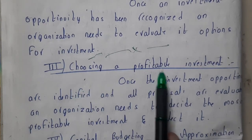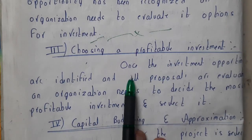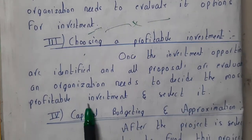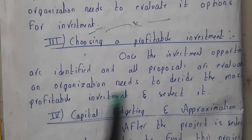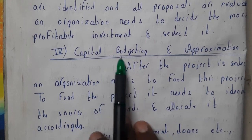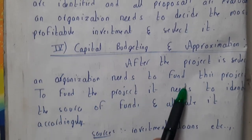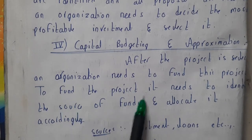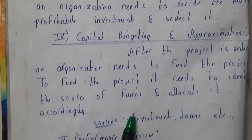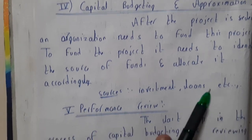Choosing a profitable investment: once the investment opportunities are identified and all proposals are evaluated, an organization needs to decide the most profitable investment and select it. Once selecting is done, capital budgeting approximation follows — after the project is selected, an organization needs to fund this project by identifying sources of funds and allocating accordingly. Sources of funds include investments, loans, shares, etc.